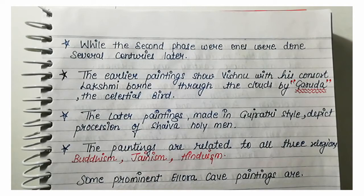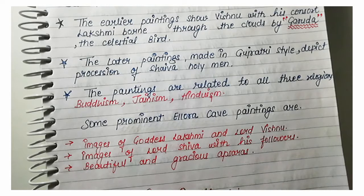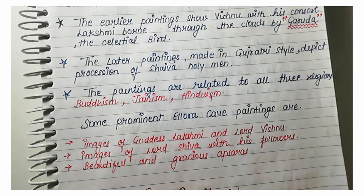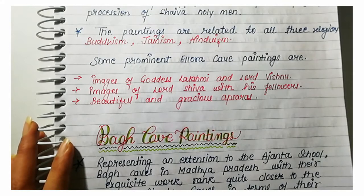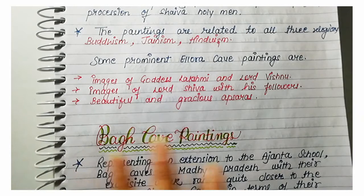The paintings are related to all three religions — Buddhism, Jainism, and Hinduism. There are a total of 34 caves divided among these three religions. The most prominent Elora cave paintings are images of Goddess Lakshmi and Lord Vishnu.